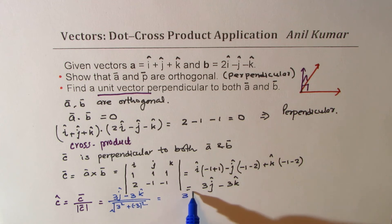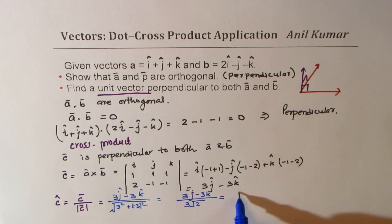So that gives you 3i plus 3j minus 3k divided by 3 square root 2. So that is how you get your unit vector.